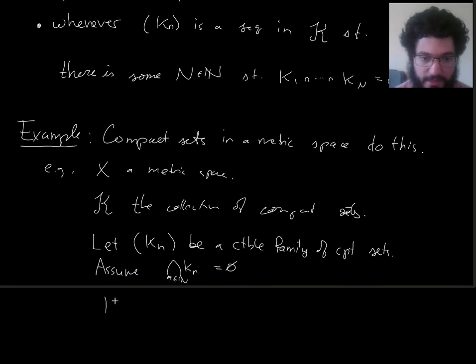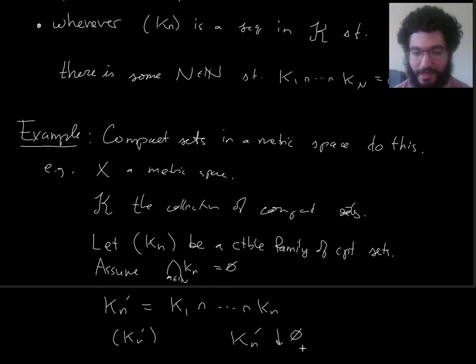Notice that's not required of a compact class. That just happens to be the case for this particular compact class of compact sets. It's closed under intersections. So then you can replace, let's define kn prime, to be like k1 through kn intersected. You can replace the kns by these kn primes. And it's harmless. This is still a collection of compact sets.